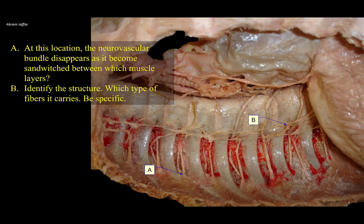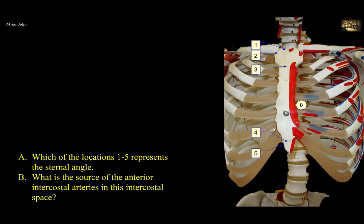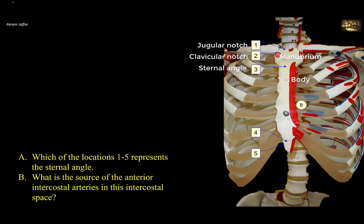Which of the locations 1 to 5 represents the sternal angle? The sternal angle, or angle of Lewis, is the angle between the manubrium and the body of the sternum, represented here by number 3. It is the site of the manubriosternal joint symphysis — a secondary cartilaginous joint — located at the level of the second costal cartilage, and is an easily palpable surface anatomical landmark. Other labeled structures: 1 is the jugular notch; 2 is the clavicular notch of the manubrium, articulating with the medial end of the clavicle at the sternoclavicular joint; 4 is the joint between the body and xiphoid process; and 5 is the costo-xiphoid angle.